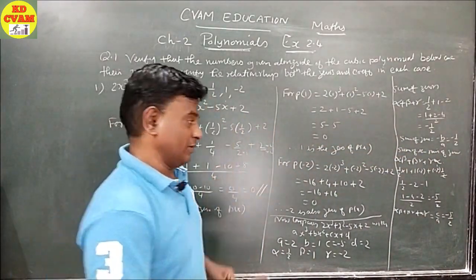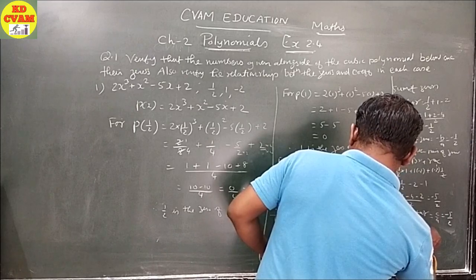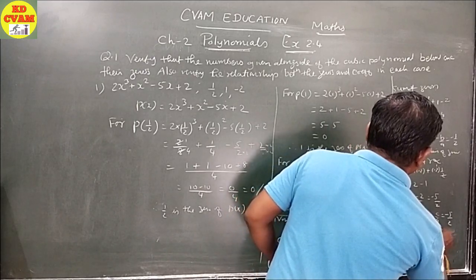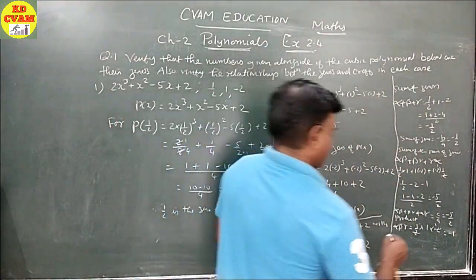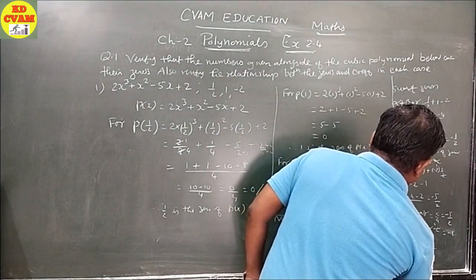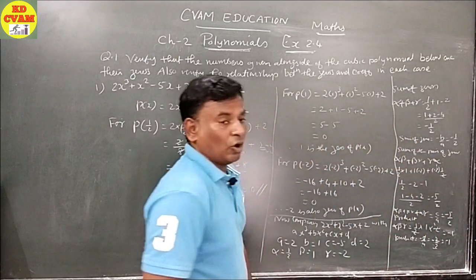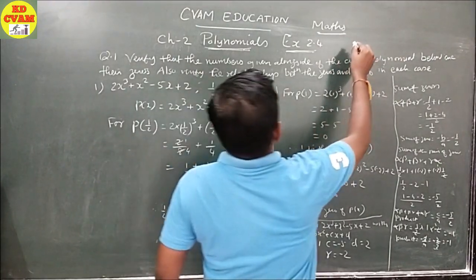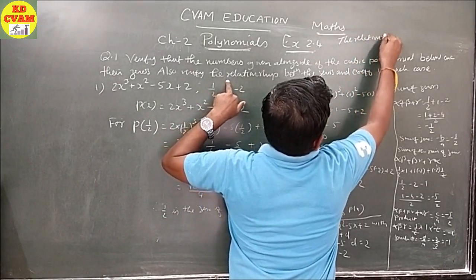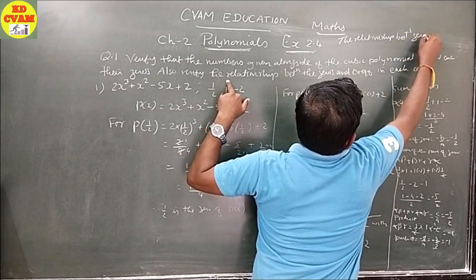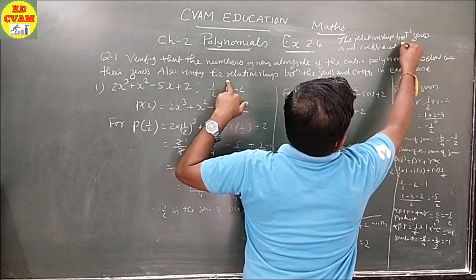Product of zeros: alpha·beta·gamma = (1/2)(1)(-2) = -1. As per the formula, product of zeros = -D/A = -2/2 = -1. Therefore all relationships between zeros and coefficients are verified.